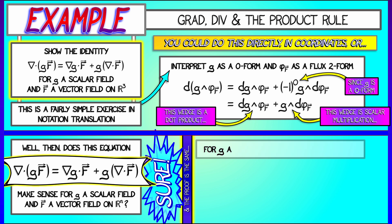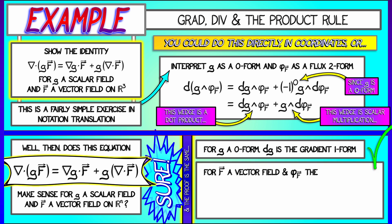For g a zero-form, dg is the gradient one-form. For f, a vector field phi sub f, the flux n minus one-form, then the derivative of phi sub f is going to be what? Well, it's going to be the sum, as i goes from 1 to n, of partial fi, partial xi, times the volume form, dx.